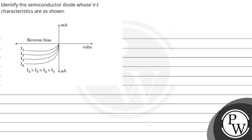Hello, let's see this question. Identify the semiconductor diode whose V-I characteristics are as shown.